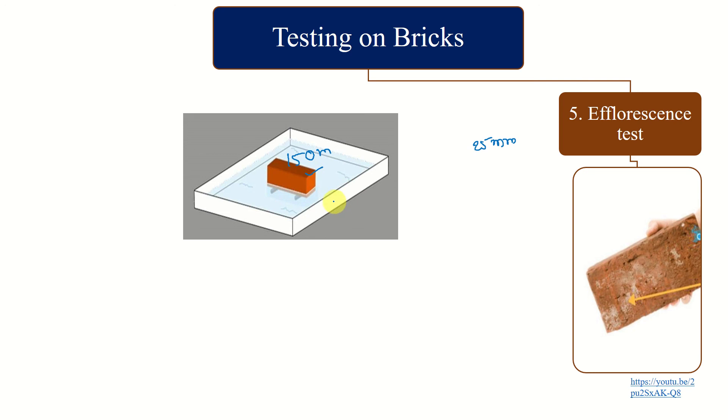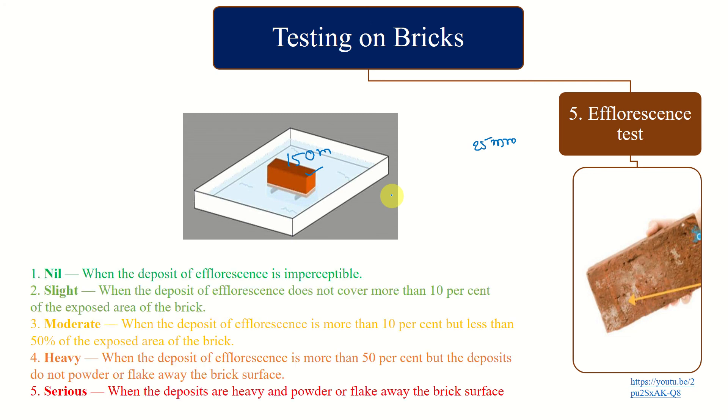The same will be repeated again and it has to be dried up later. You can see some patches on the brick. The report will be nil - that means efflorescence is not there, and the deposit of efflorescence is imperceptible, meaning there are no patches visible. Then you can see there is no efflorescence on the brick.